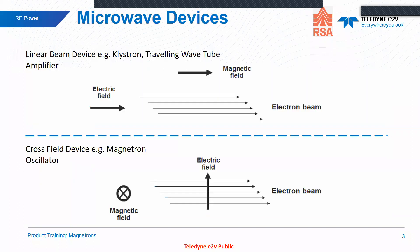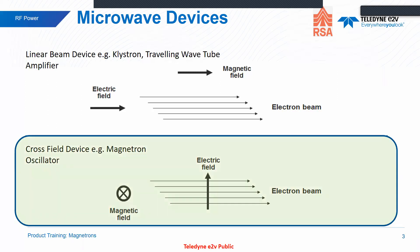There are two main types of microwave devices. The linear beam device - which many of you will be familiar with - such as a klystron or a traveling wave tube, where the fields are aligned. These devices are amplifiers, requiring a small input signal to be amplified up. They generally work at high voltage and can end up needing oil around the high voltage terminals. The other device type is what we call a cross-field device - this is the magnetron. It not only amplifies the signal but sets its own frequency, so it's an oscillator as well.